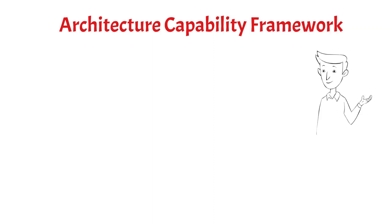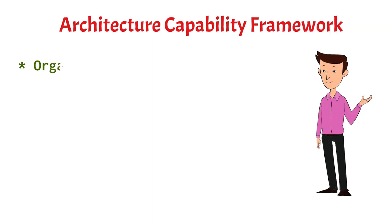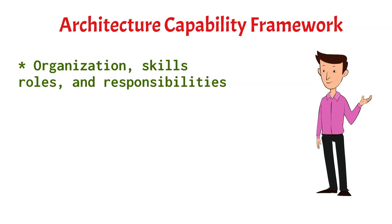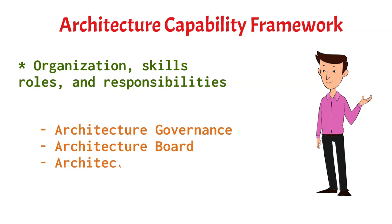The architecture capability framework defines the organization, the skills, the roles, and the responsibilities required to implement TOGAF or to implement an architecture. And typically, the concepts that we look at there are the architecture governance, the architecture board which is one of the highest bodies that determine how we progress with our architecture work, architecture contract, and the architecture compliance.